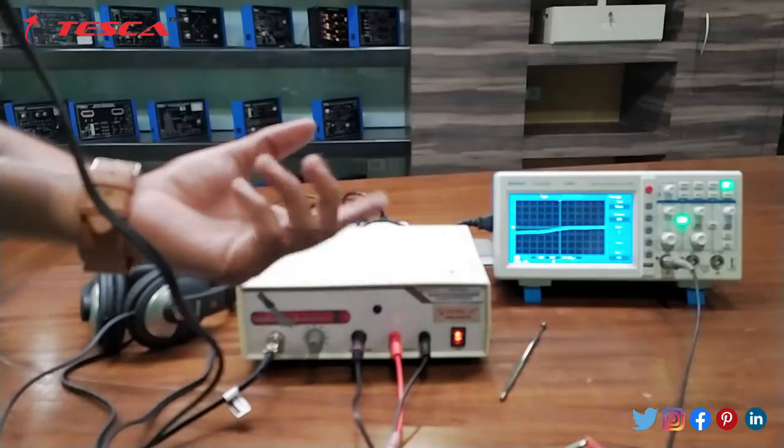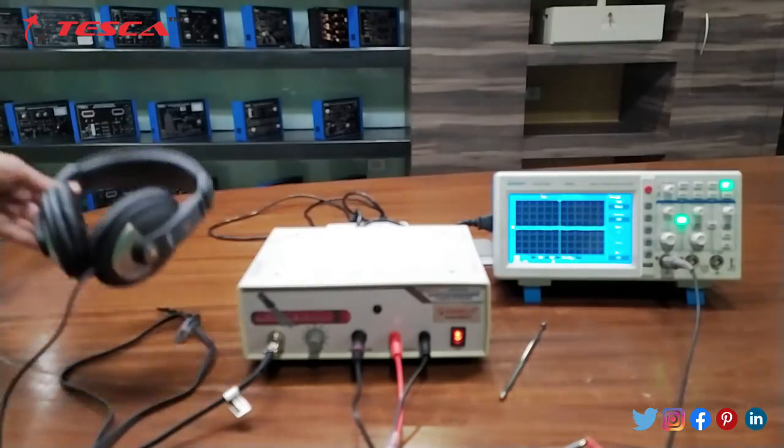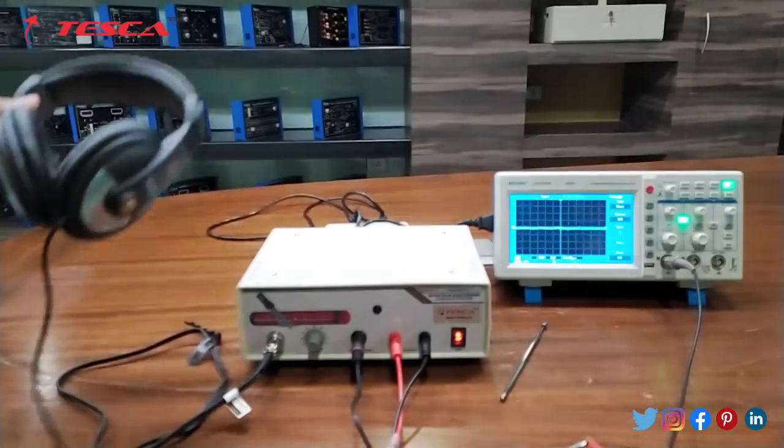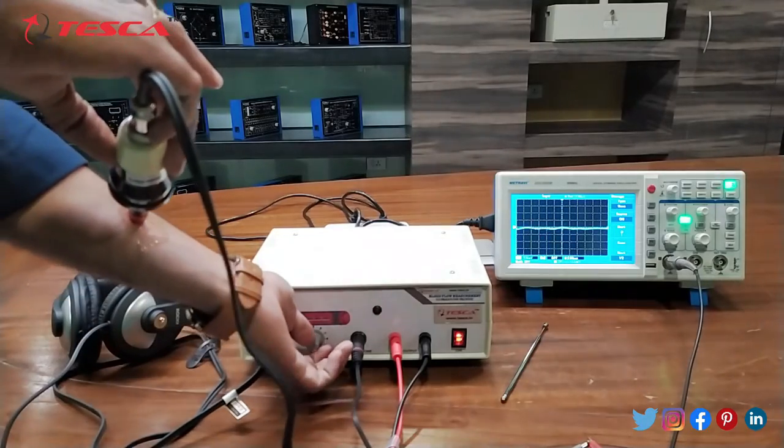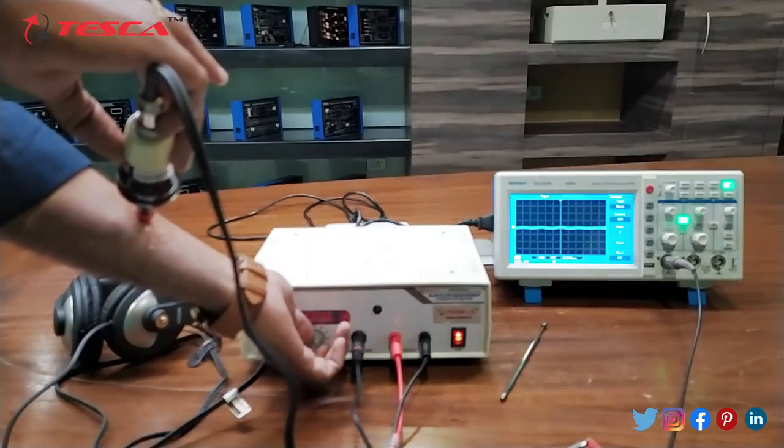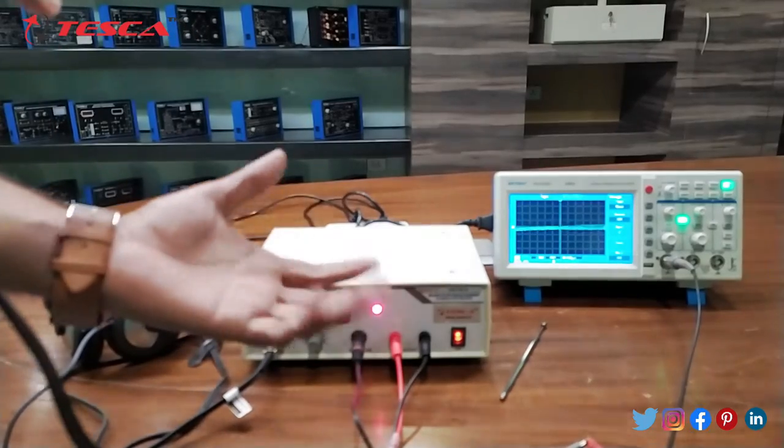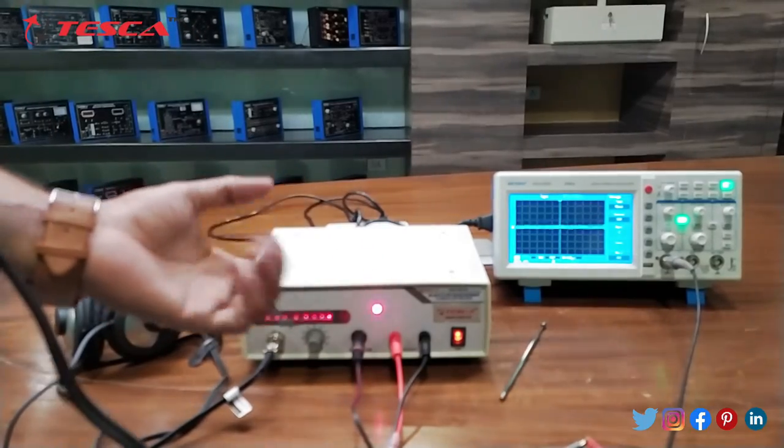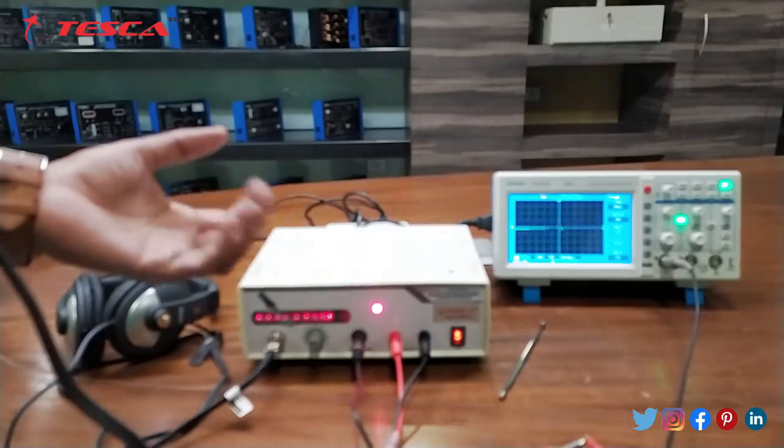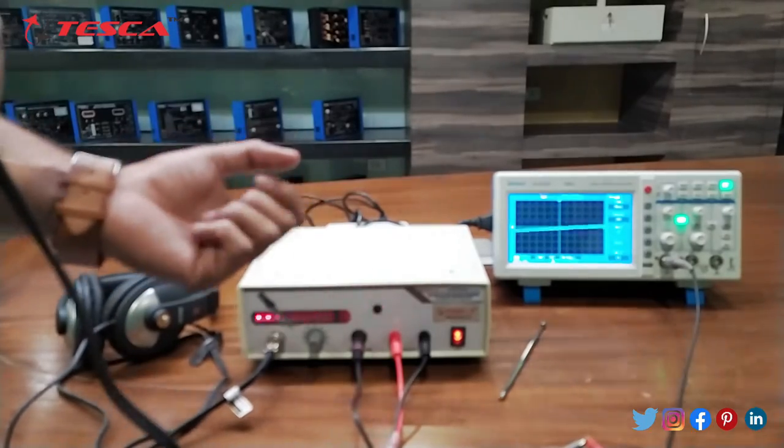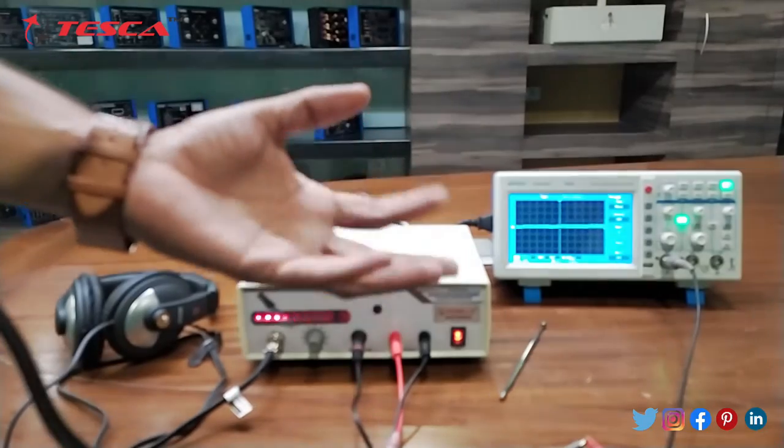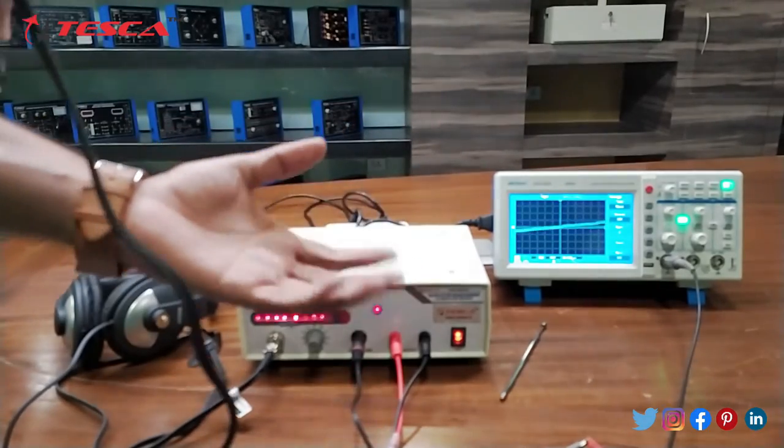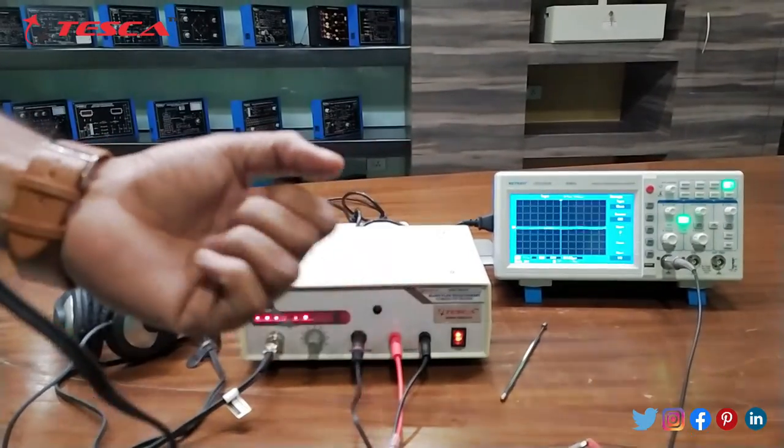And here we can see that on the DSO there is a movement which shows the blood flow measurement. And you can hear the sound through these headphones. And you can increase the audio from here. On the DSO screen you can see that the signal or the wave are propagating. This shows the blood flow of our body.